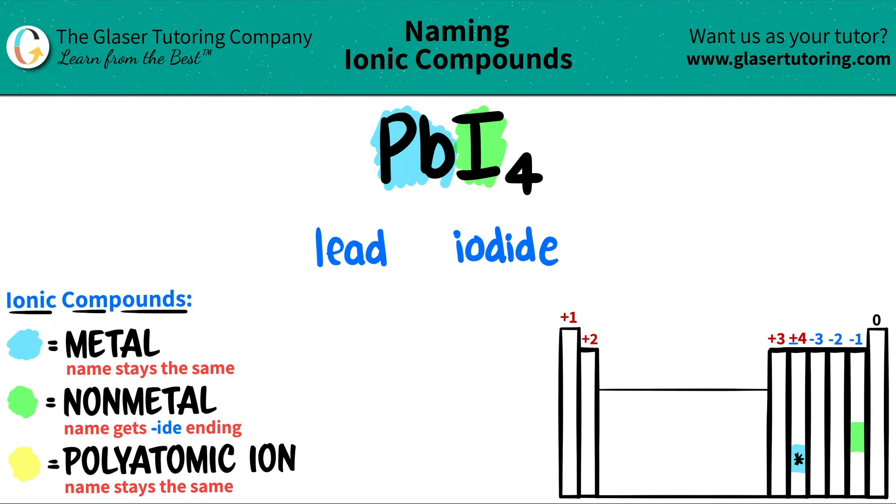So even though it's not in that block, and because there's so many exceptions in chemistry, this is one of them, you need a Roman numeral. And the Roman numeral is always the charge of the metal.